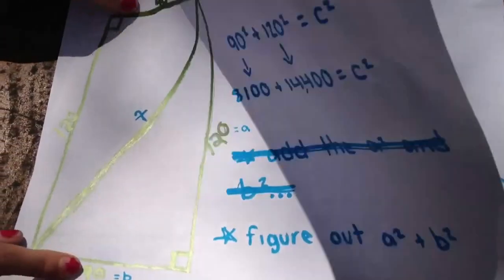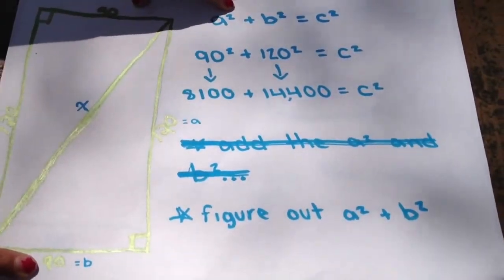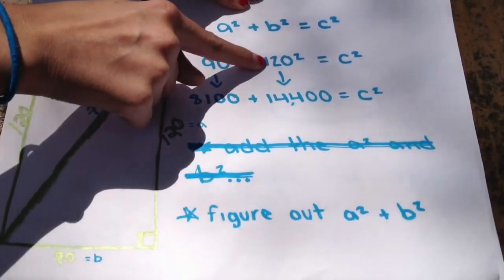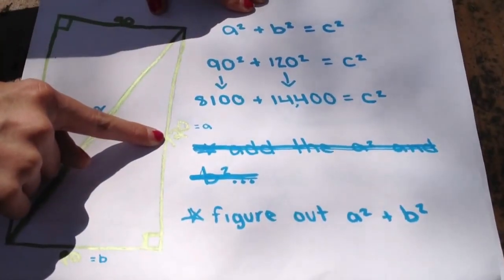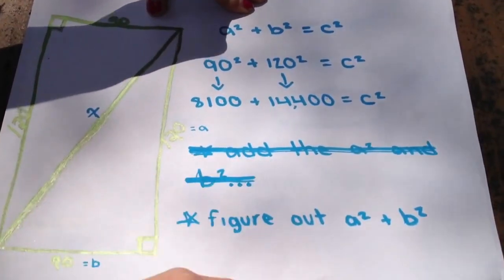So we're going to have to do 90 squared, which is 8,100, and 120 squared, which is 14,400. And all that equals what? We add those together and we'll equal c squared.